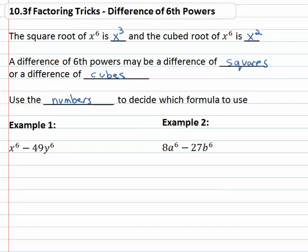When we see x to the sixth minus forty-nine y to the sixth, there are only two terms so we're thinking shortcuts. With a sixth power it could be either cubes or squares. So we look at the number: can we take the square root of forty-nine, or can we take the cube root of forty-nine? We can take the square root of forty-nine, so this is a difference of squares.